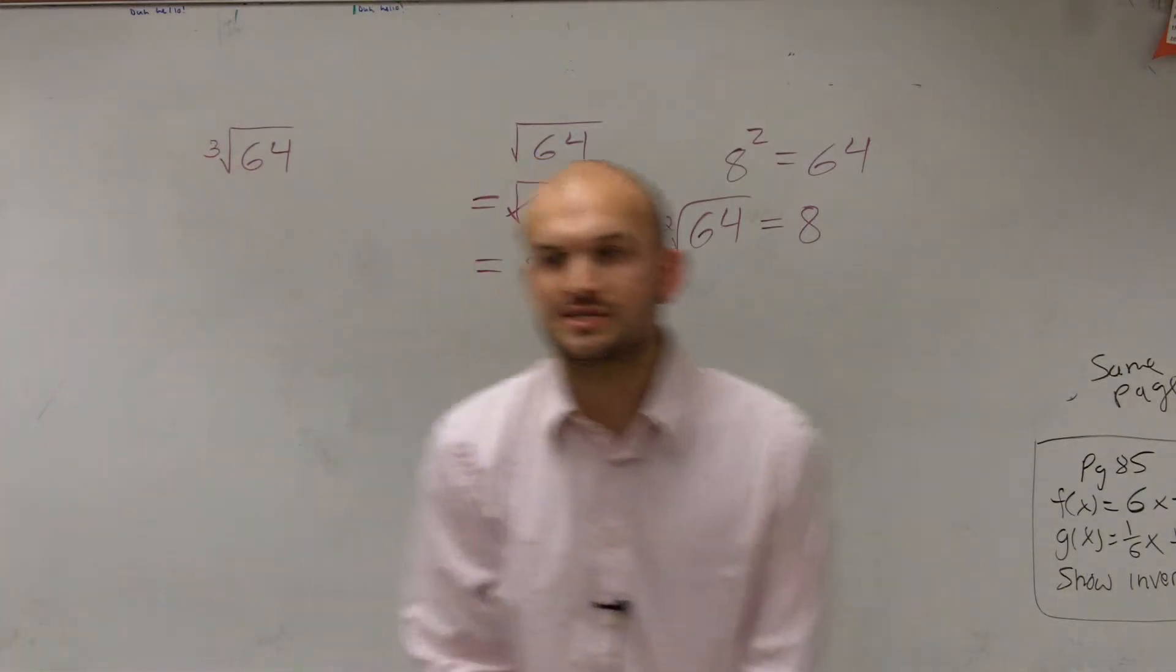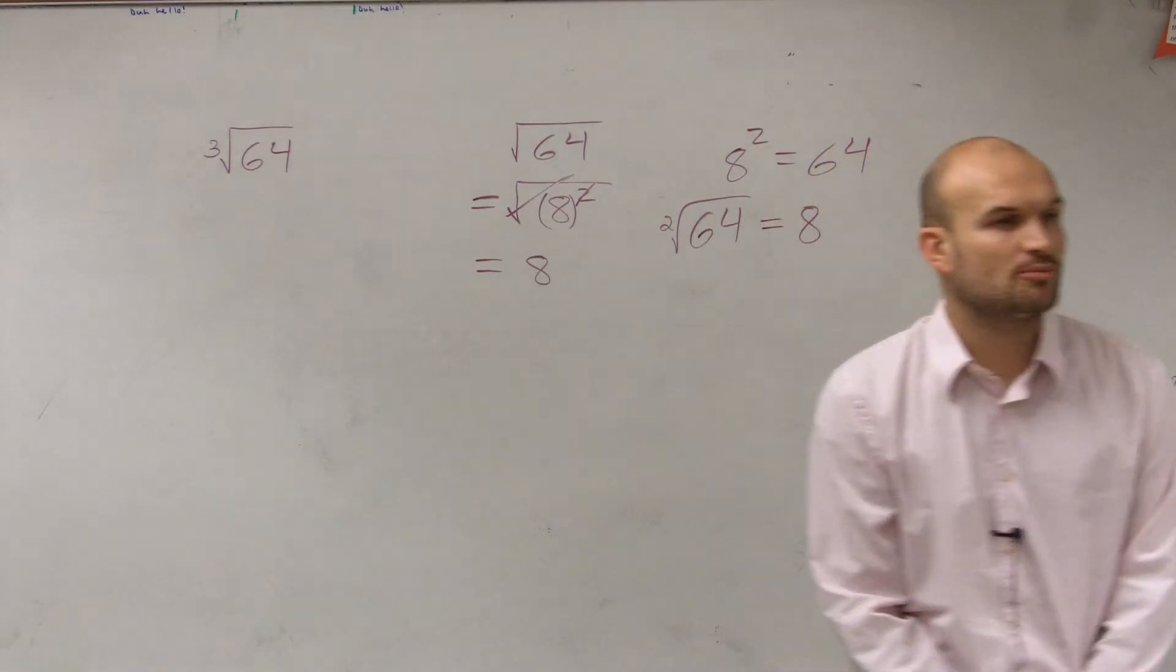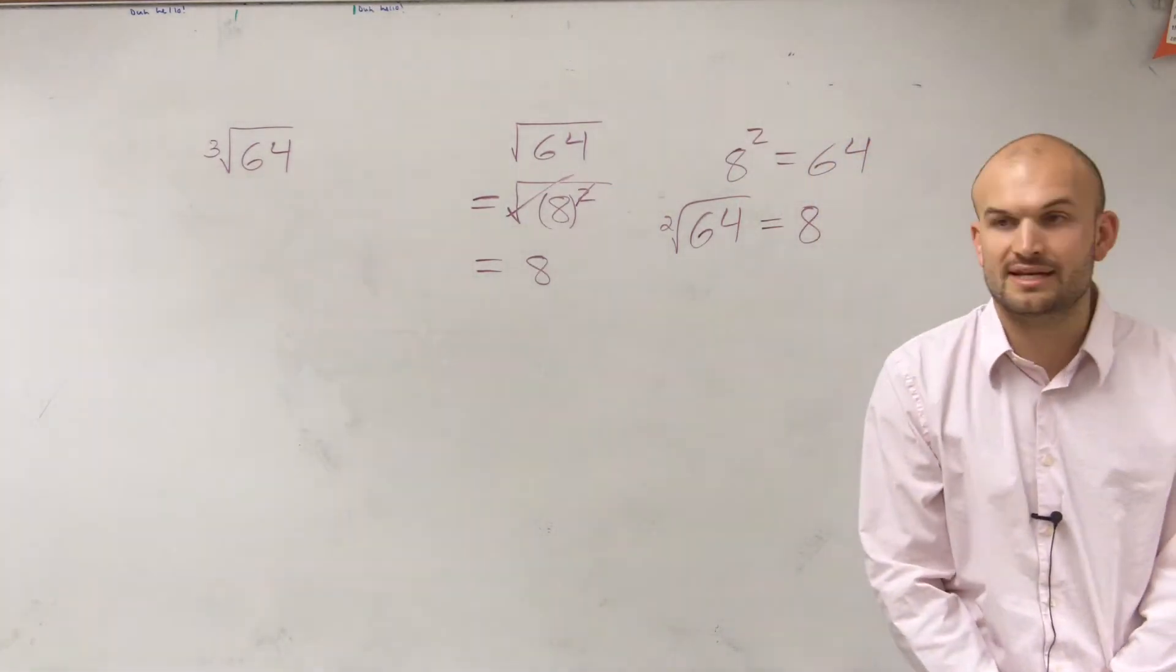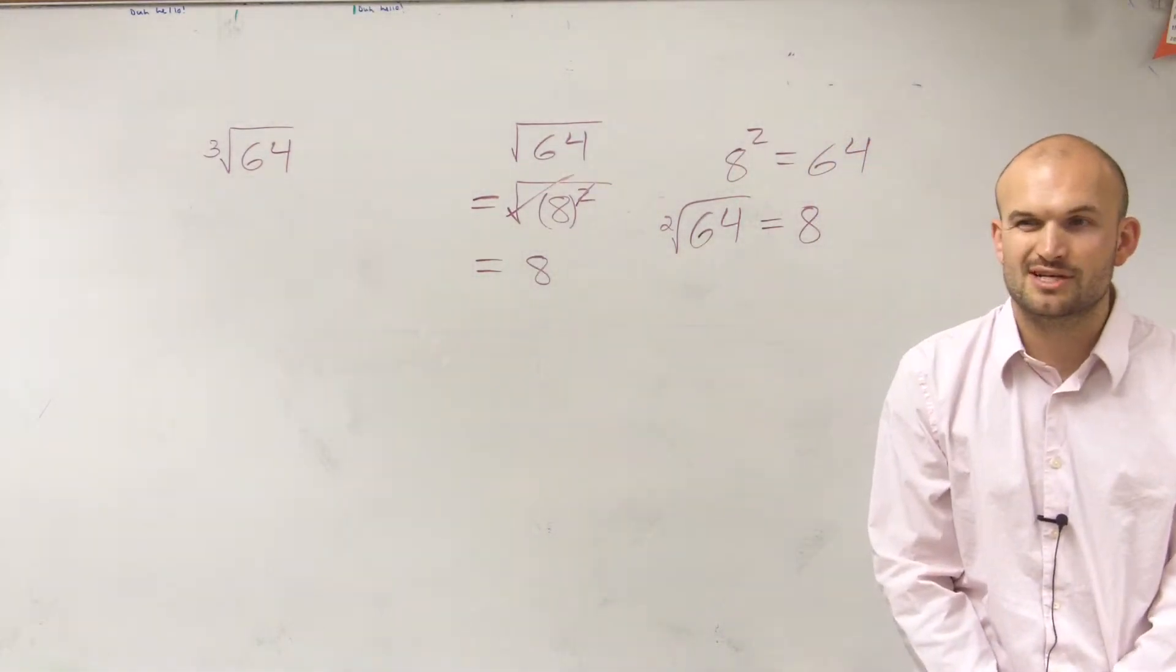So here we have the cube root of 64. What number multiplied by itself three times is going to give us 64?